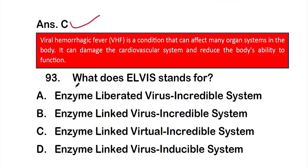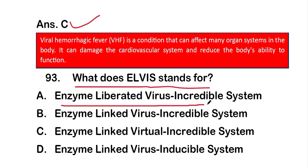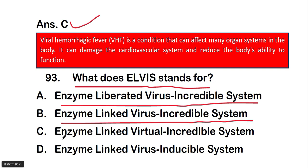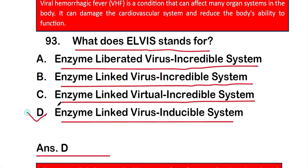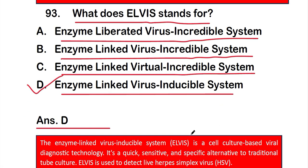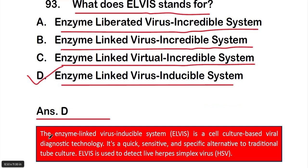Question number 93: what does ELVIS stand for? Options are: option A, enzyme liberated virus incredible system; option B, enzyme linked virus incredible system; option C, enzyme linked virtual incredible system; option D, enzyme linked virus inducible system. The right answer is option D. ELVIS, or enzyme linked virus inducible system, is a cell culture-based viral diagnosis technology — a quick, sensitive, and specific alternative to traditional tube culture used to detect live herpes simplex virus.